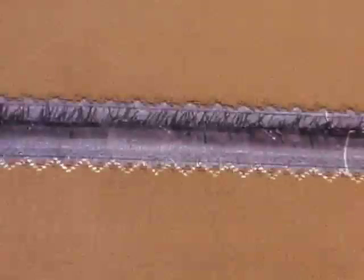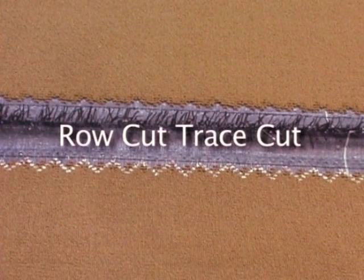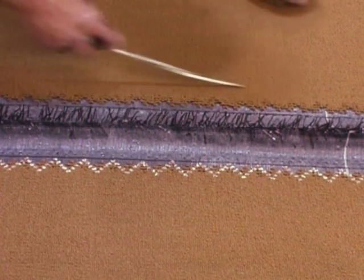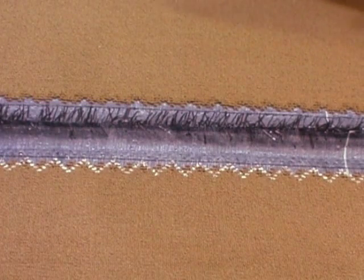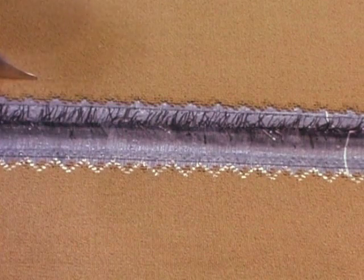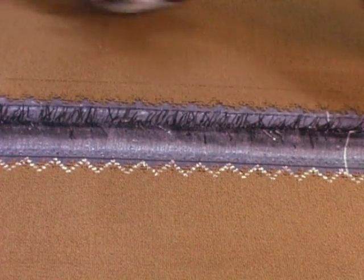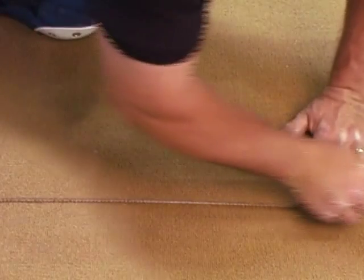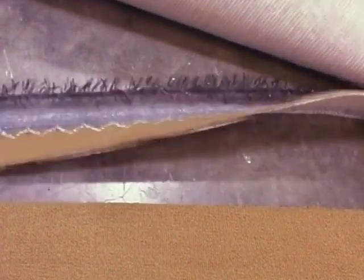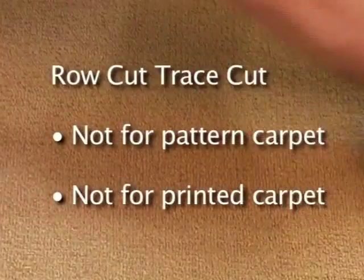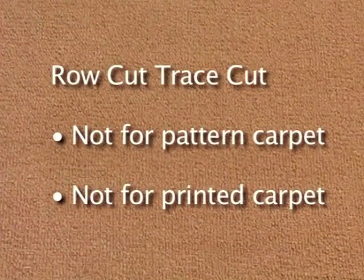When installing pattern carpet, care must be exercised to row cut according to pattern match and yarn sequence. The next seam cutting method is the row cut, trace cut method. Use a screwdriver to separate the row on one selvage edge, trimming at least one inch from the selvage edge, and then use the cushion back cutter to trim between these separated rows. Overlap the cut edge over the remaining edge two to three inches and use the cushion back cutter to trace along the first cut edge while cutting the remaining edge. This method is not to be used on pattern carpets; it works well on commercial loop carpets without patterns.